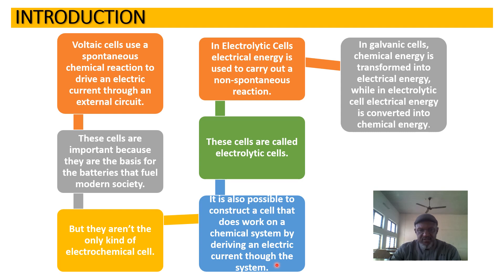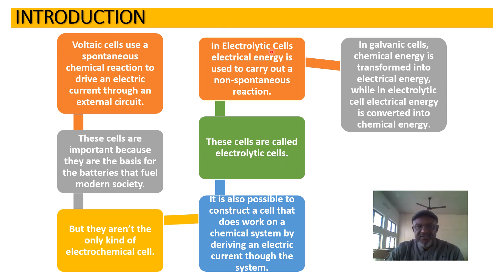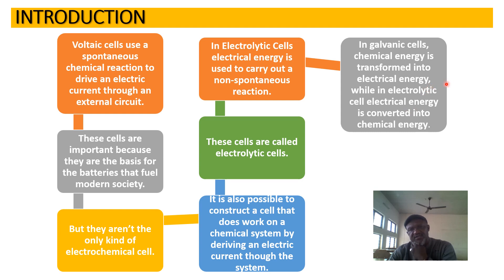These cells are called electrolytic cells. Electrolytic cells are the opposite of galvanic cells in operation. In electrolytic cells, electrical energy is used to carry out non-spontaneous reactions. In galvanic cells, chemical energy is transformed into electrical energy, while in electrolytic cells, electrical energy is converted into chemical energy.